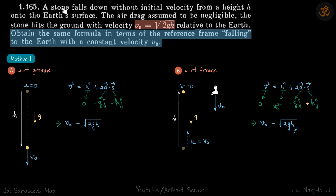A stone falls down from height h to the ground. We know that the stone will hit the ground with velocity √2gh. We need to obtain the same formula in terms of a reference frame which is falling to the earth with a constant velocity v₀.